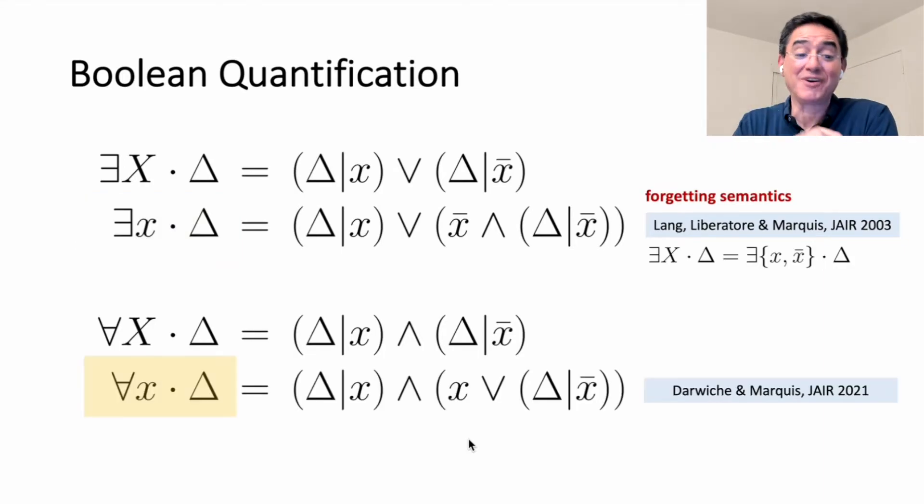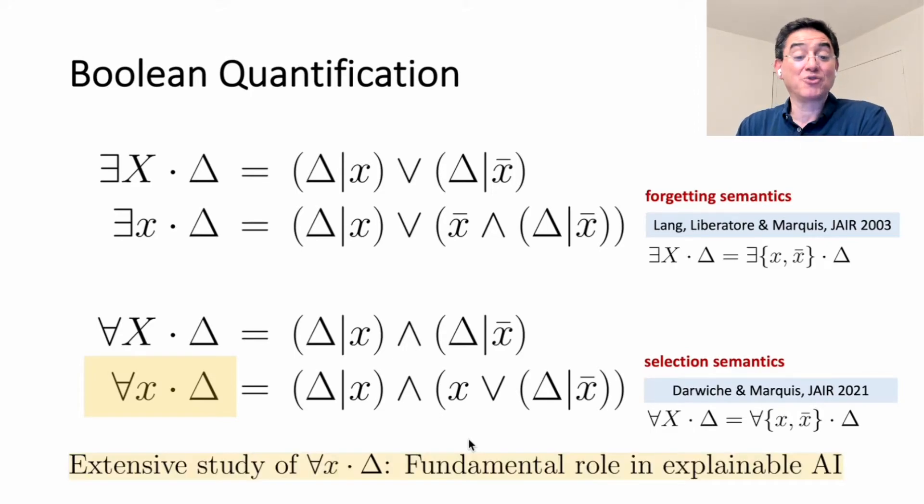In this work, we do exactly that. We do provide semantics for universal quantification and show that it's significant for explainable AI. In fact, we actually also define a refinement on variable quantification in this case, and we propose universal literal quantification, which is also more general and more refined. The semantics we give is a selection. We'll talk about this later. And we show that this operation is fundamental for explainable AI, due particularly to the semantics.